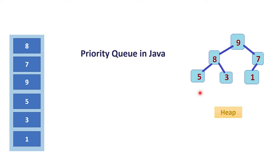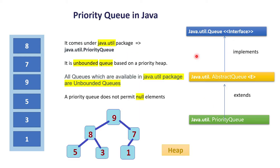In day-to-day programming, priority queue is heavily used, so each and every time we will not create the priority queue and its behavior from scratch. That's why in Java, priority queue comes as an inbuilt class in the java.util package as java.util.PriorityQueue, and we can use it directly.